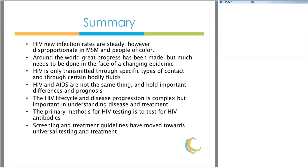In summary: HIV infection rates are steady, but HIV disproportionately affects MSM and people of color. Around the world, great progress has been made, but much needs to be done in the face of a changing epidemic. HIV is only transmitted through specific types of contact and certain body fluids. It's important to remember that HIV and AIDS are not the same thing and hold important differences in prognosis. HIV life cycle and disease progression is complex, but understanding it is important to understand available treatments. The primary method for HIV testing is to test for HIV antibodies, though early in the disease process these tests may be negative. Screening and treatment guidelines have moved towards universal testing and treatment, so if your clinical judgment suggests you should be testing, go ahead and test.